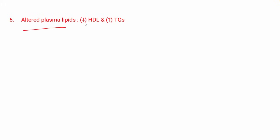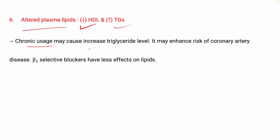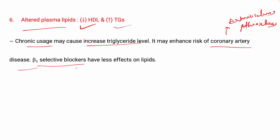Another adverse effect is altered plasma lipids. Beta blockers decrease HDL levels and increase triglyceride levels. Chronic usage may cause increased triglyceride levels, which can lead to coronary artery disease such as arteriosclerosis or atherosclerosis. Beta-1 selective blockers have less effect on lipids. Beta blockers can also lead to sexual dysfunction.